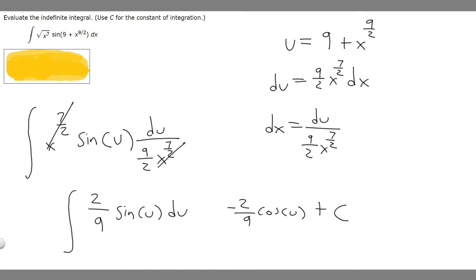So now we got this. All we got to do is replace u with what we found u to be. In this case, it's 9 plus x to the 9 over 2. So we plug it in. We have minus 2 over 9 times the cosine of 9 plus x to the 9 over 2, and then plus C. So this right here is going to be your final answer.